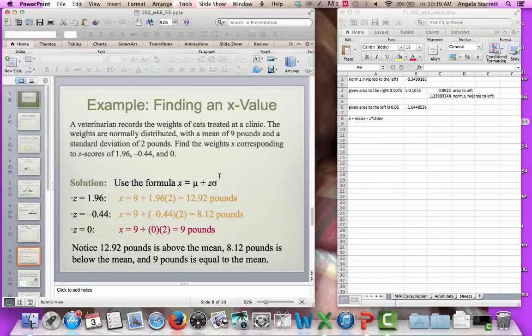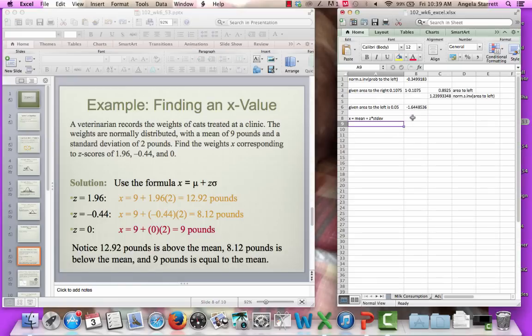A veterinarian records the weights of cats treated at a clinic. The weights are normally distributed with a mean of 9 pounds and a standard deviation of 2 pounds. I'm working over here in Excel, and I'm going to go ahead and tell myself that the mean is 9 pounds and the standard deviation is 2 pounds. We want to find the weights x corresponding to z-scores. So I have z-score of 1.96, negative 0.44, and 0. So these are my z-scores. We want to use our formula and solve for poundage of the cats.